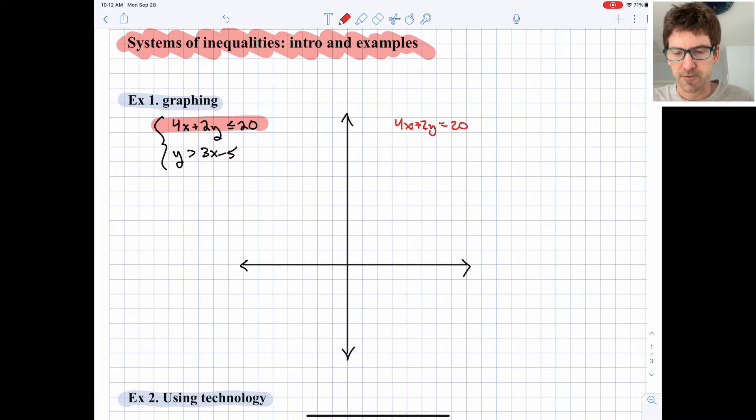Let's just graph the boundary line first. I like to graph that using the intercept method. Let's imagine x is 0, then y would be 10. If x is 0 that disappears, 2y = 20, so y is 10. That's 6, 7, 8, 9, 10 up here.